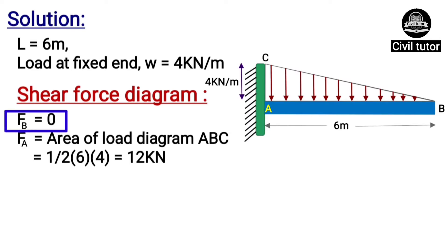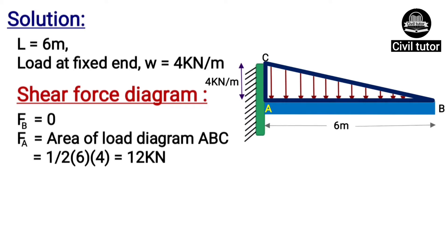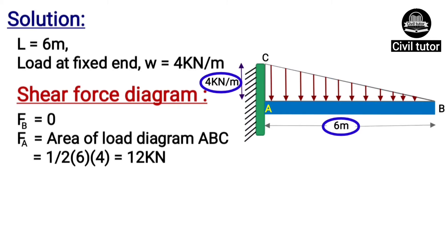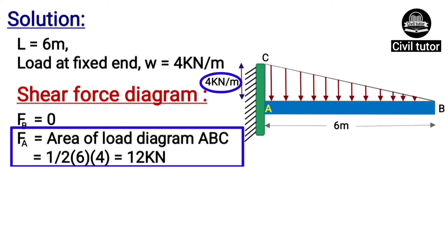At point B, the value of shear force will be equal to zero. At point A, the value of shear force will be equal to the area of the load diagram, which is the area of a triangle: ½ × base (6) × height (4) = 12 kilonewton.